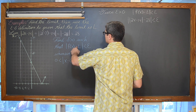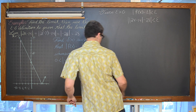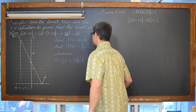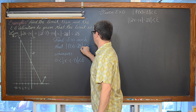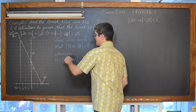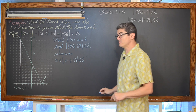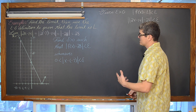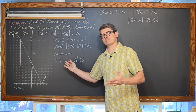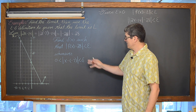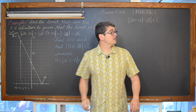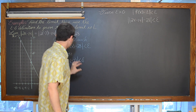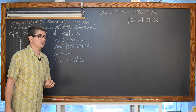We need to find delta greater than zero such that the absolute value of f(x) minus 28 is less than epsilon whenever zero is less than the absolute value of x minus negative 7, or effectively x plus 7, is less than delta. So how do we get this expression with an absolute value symbol in it to look like just x plus 7?